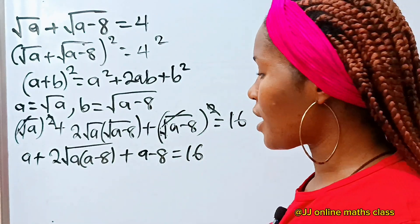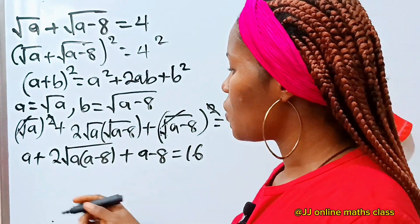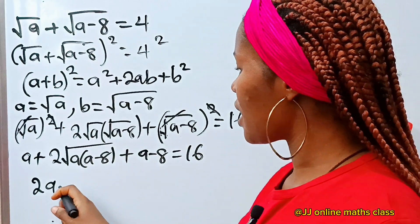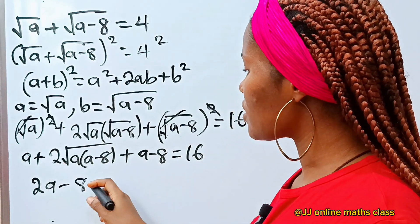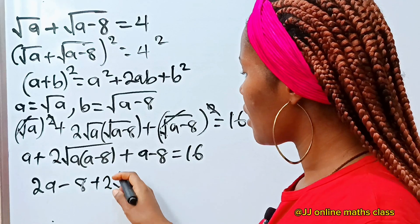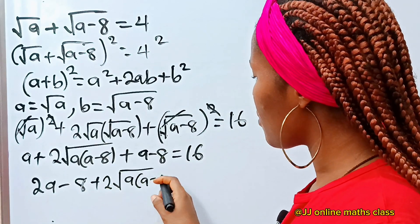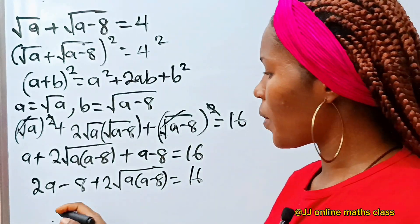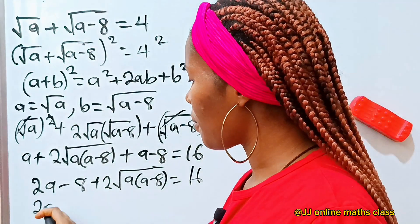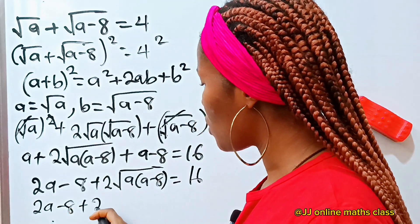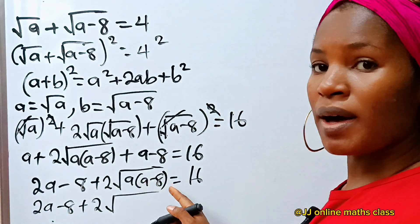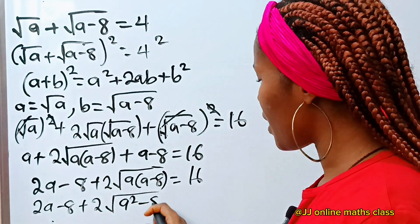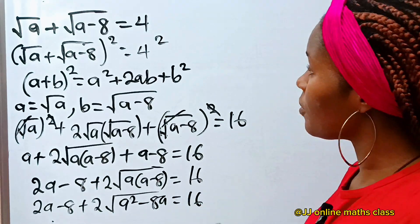At this point let's collect like terms. We have a plus a, which gives us 2a. Then minus 8, plus 2 times root of a(a minus 8), is equal to 16. So we have 2a minus 8 plus 2 root of a squared minus 8a, is equal to 16.